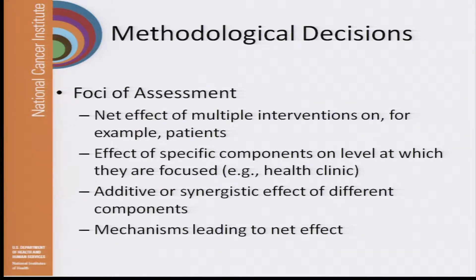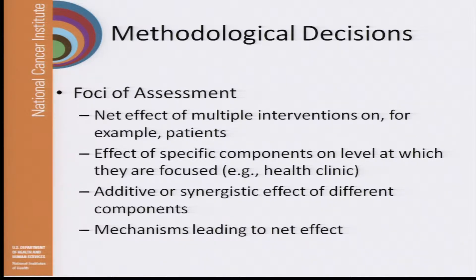I was asked to speak about methodological decisions. When you're sitting around with your multidisciplinary, multivariate team, you're going to make a variety of decisions. First of all, what's your foci of assessment? What's the net effect on patients? For example, using Jane's Table 1, let's say we're deciding that we want to increase appropriate colorectal screening among patients — that's a discussion we have to come to.